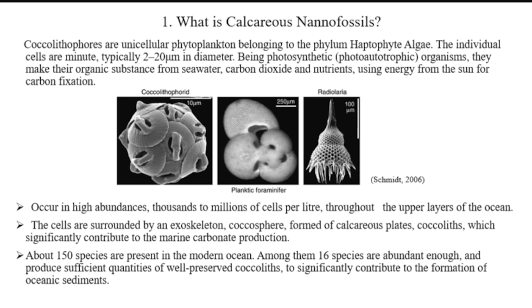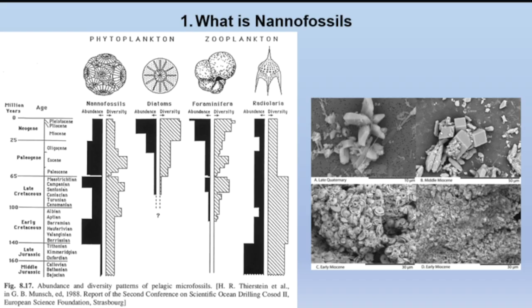Ini adalah perbandingan antara masing-masing mikrofosil dan jenis-jenisnya: ada radiolaria, foraminifera, diatom, dan nanofosil. Dalam pembagiannya, nanofosil termasuk dengan fitoplankton, sedangkan untuk zooplankton itu ada foraminifera dan juga radiolaria. Di sebelah kiri bisa dilihat itu adalah umur range daripada kemunculan spesies nanofosil ini di dunia. Yang berwarna hitam pada tabel adalah abundance atau kelimpahan nanofosil dari mulai Jurassic 140 million years ago sampai dengan saat ini. Yang berwarna abu-abu dengan garis-garis adalah diversity daripada nanofosil yang bisa kita temukan dari sejak middle Jurassic sampai dengan saat ini.